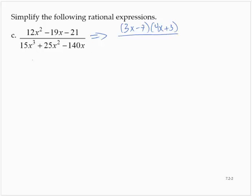after you factor out a 5x, we'd have 5x by 3x squared plus 5x minus 28. And factoring that trinomial further, we would have still the 5x, we would have an x plus 4, and we would have a 3x minus 7.